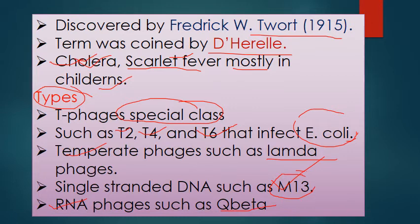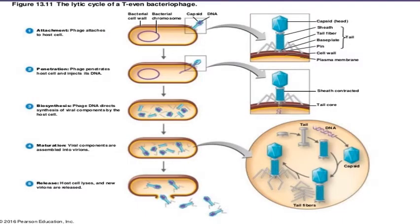Bacteriophages multiply in two ways: the lysogenic cycle and the lytic cycle. We will discuss these in detail in the next lecture. The first step in the lytic cycle is attachment — the bacteriophage attaches itself to the bacterial cell surface with the help of tail fibers.